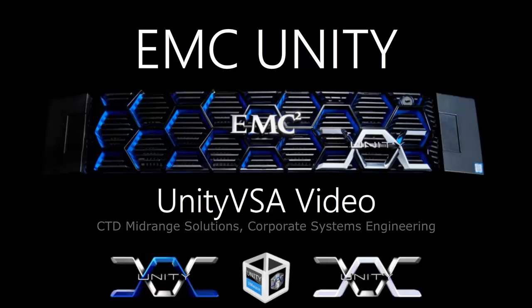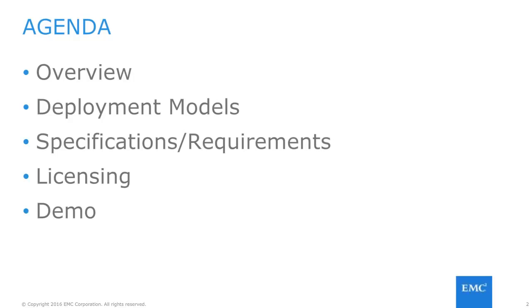Hello, and welcome to the EMC Unity video on Unity VSA, which is a software-based storage solution for general-purpose servers running VMware ESXi Hypervisor. For this video, we will be going through a few topics, including a general overview of what Unity VSA entails and what's included in the product.